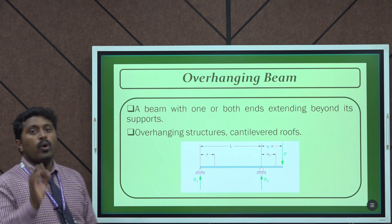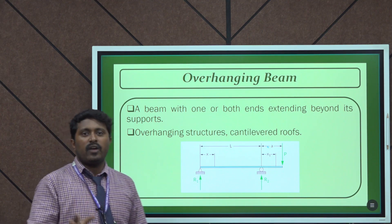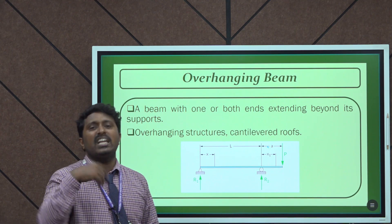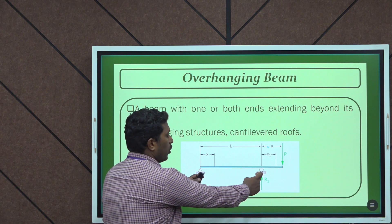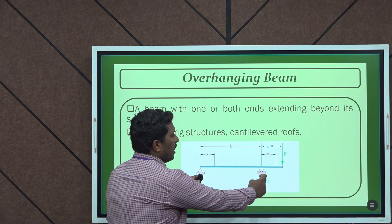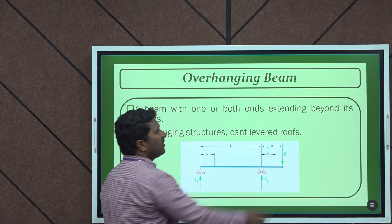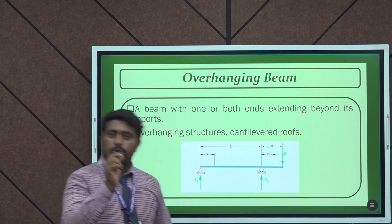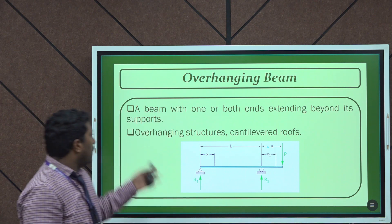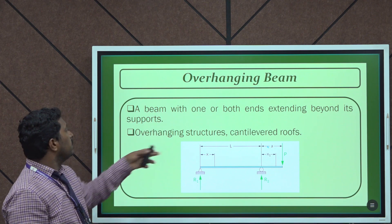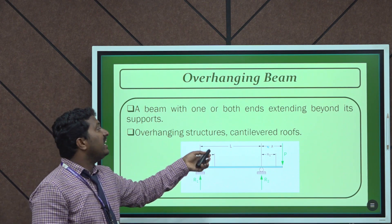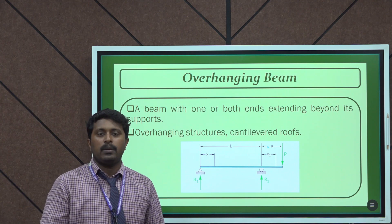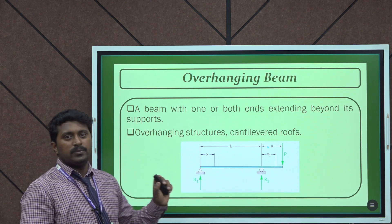The next type is the overhanging beam, which is a combination of a simply supported beam and a cantilever beam. Up to a certain point it acts as a simply supported beam, and the extended portion acts as a cantilever. The main application of overhanging beams includes cantilevered roofs.